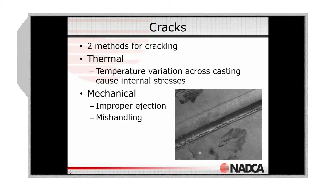The second defect is cracks. A crack is what you'd expect — it's where two parts of the material have broken or sheared apart, leaving a void running through a section of it. You can see that here in this picture, which shows a crack running right through the middle of the casting.